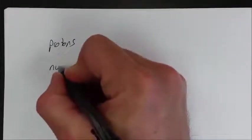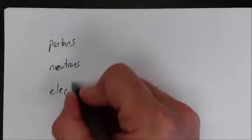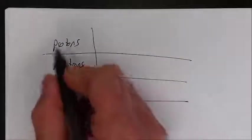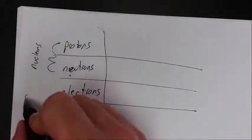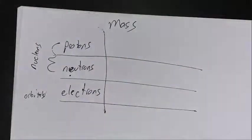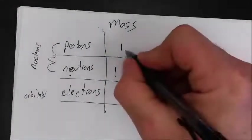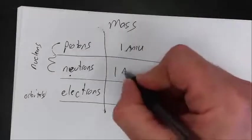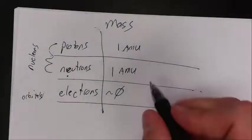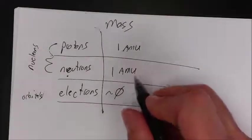All right, so the parts of the atom. We have protons, neutrons, and electrons. Protons and neutrons are in the nucleus, so they're called also nucleons. And the electrons are in orbitals around the nucleus. Mass: protons and neutrons each have a mass of one AMU, atomic mass unit. Electrons are basically zero. We pretty much treat electrons as they have no mass.